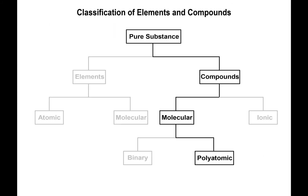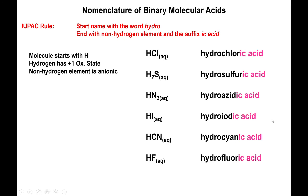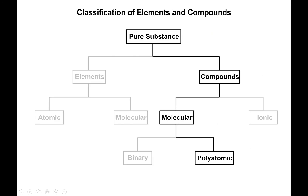One extra thing: if any of these molecules do not have the (aq) symbol, you revert to normal naming. Without (aq), if the second element is only present in an amount of one, you still use -ide but do not say mono for the first element: HCl → hydrogen chloride; H₂S → dihydrogen sulfide; HI → hydrogen iodide; HCN → hydrogen cyanide; HF → hydrogen fluoride. The (aq) symbol is a prerequisite to call something an acid. In the next video we'll talk about polyatomic molecular compounds.